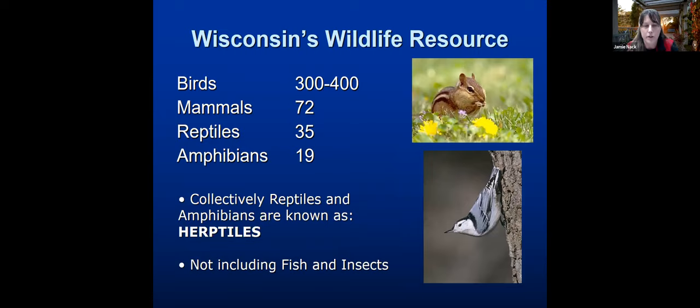To show the diversity of wildlife species in Wisconsin: between 300 and 400 birds, depending on the time of year with migration. Mammals, about 72. Reptiles include four species of lizards, 12 turtles, and about 20 snakes. And amphibians include a single toad species, about 11 frogs, and another seven or eight salamanders.